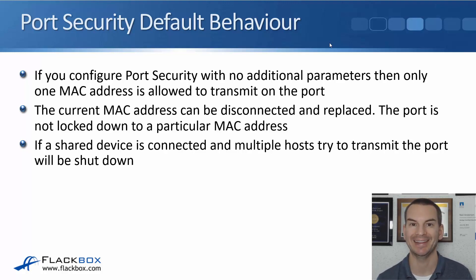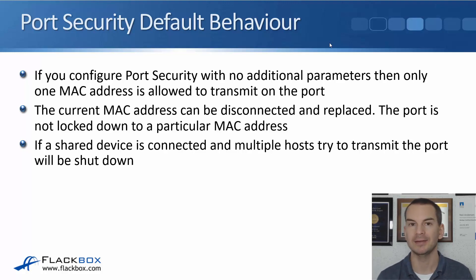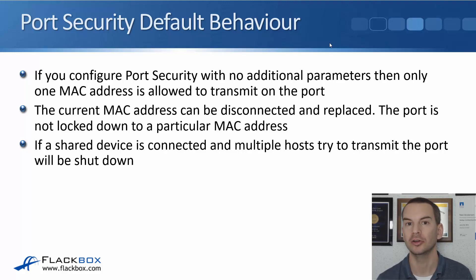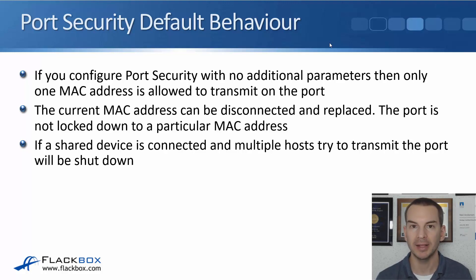With the default settings, the current MAC address can be disconnected and replaced — the port is not locked down to a particular MAC address. So if host MAC 1.1.1 is plugged in and transmitting, that's fine. If you disconnect that host, the port goes down. You then plug in another host with MAC 2.2.2, the port goes live again, the switch will learn the new MAC address of 2.2.2, and that host can transmit. So with the default setting it locks down to just one MAC address, but the actual MAC address on there can be changed. If a shared device is connected and multiple hosts try to transmit, the port will be shut down.